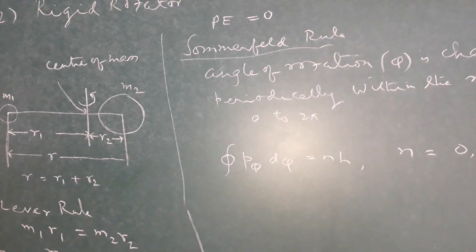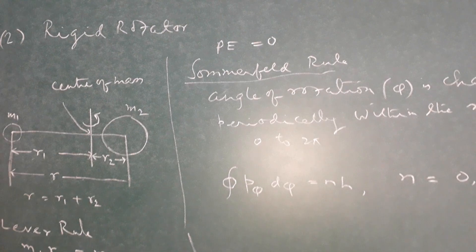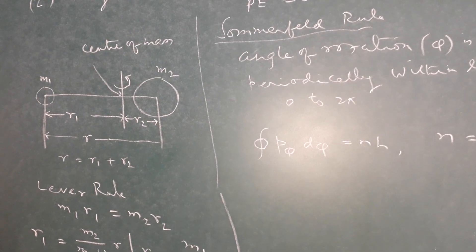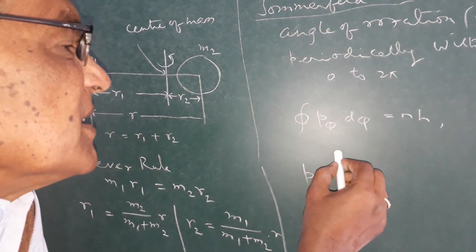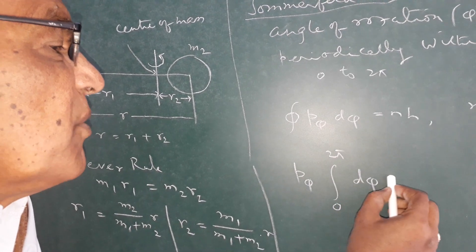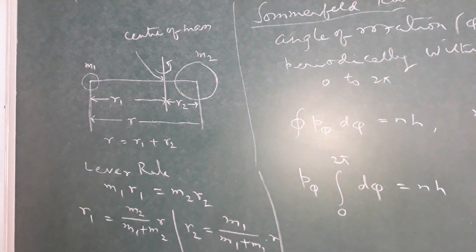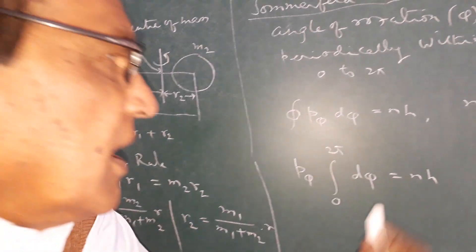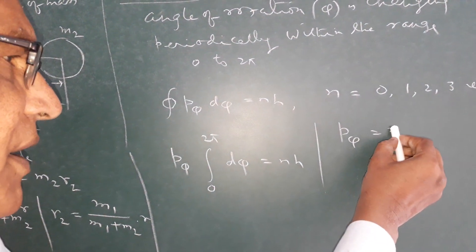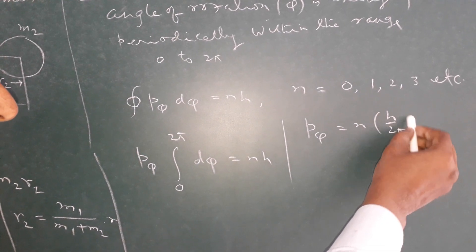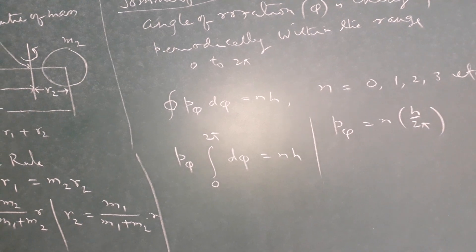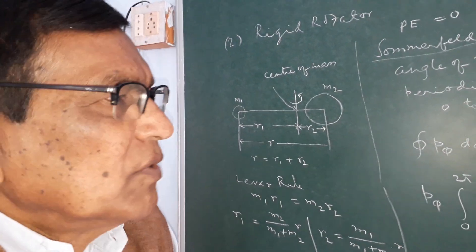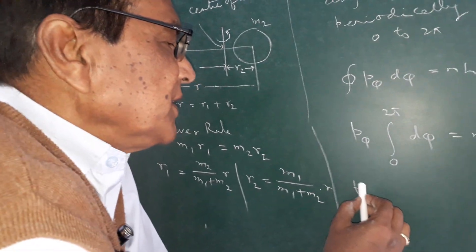Here p_phi remains constant during this motion, since p_phi equals mvr and all three quantities are constant. So p_phi can be taken outside the integral. Integrating with limits 0 to 2π and inserting these limits, we get p_phi = nh / 2π. This means the angular momentum of this rotation is quantized, having discrete values h/2π, 2h/2π, 3h/2π, with no values in between.